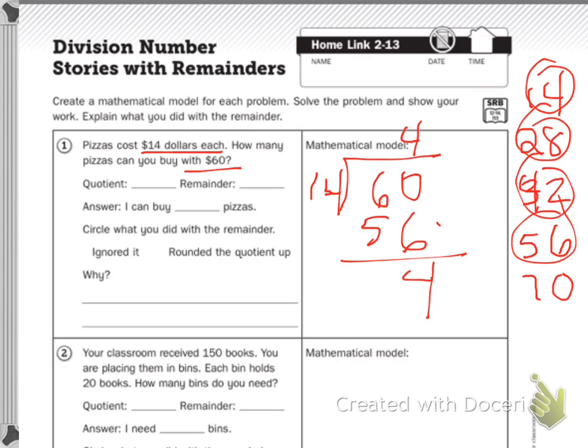So my quotient or my answer is 4. So I can buy 4 pizzas. What are we going to do with the remainder? We're just going to ignore it because we can't buy another whole pizza. Maybe you'll use it as the tip for the delivery person, but you cannot use it on pizza.